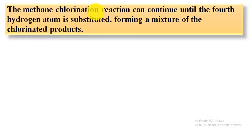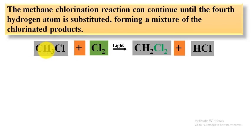The methane chlorination reaction can continue until the fourth hydrogen atom is substituted, forming a mixture of the chlorinated products. CH3Cl plus Cl2, here a hydrogen atom is dropped and a Cl atom is replaced, so it becomes CH2Cl2 plus HCl. This is called dichloromethane.